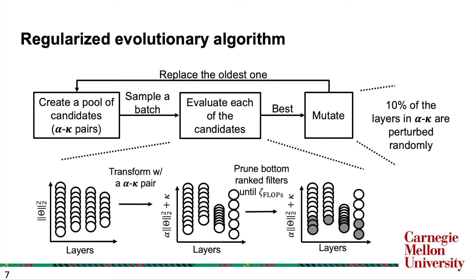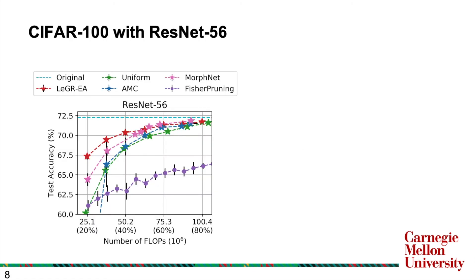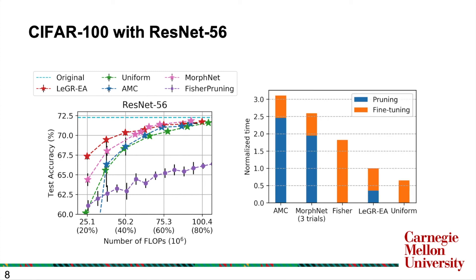Now that we understand how the global ranking is learned, let's look at the empirical results. We first show results using CIFAR-100 and ResNet-56. We can see that the proposed method, Ledger-AEA, marked in red, outperforms other filter pruning methods including AMC, MorphNet, Fisher pruning, and baseline uniform pruning. We also analyze the time it takes to obtain the solution. Our method, Ledger-AEA, outperforms AMC and MorphNet drastically because they have to conduct a search for each target FLOPs, while Ledger only needs to learn the ranking once.